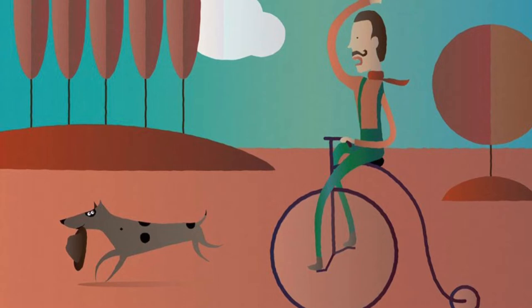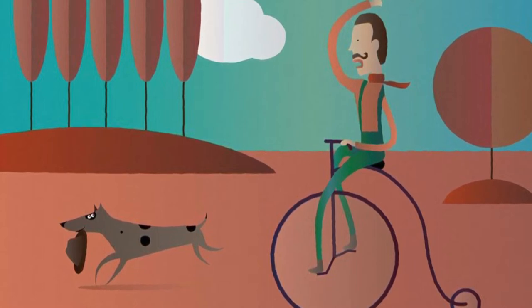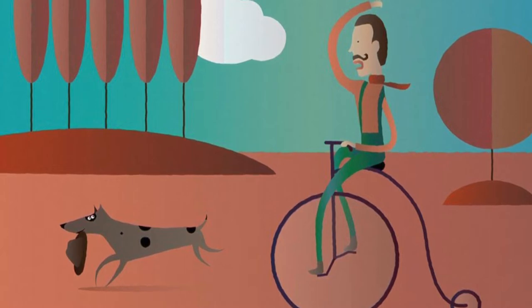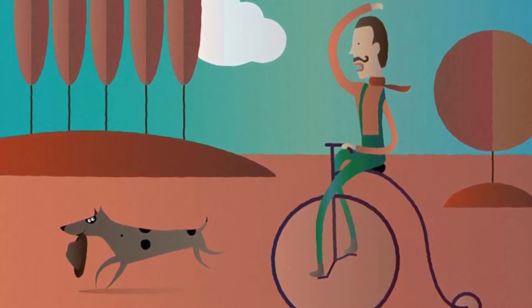'Twas Mulga Bill, from Eagle Hawk, that caught the cycling craze. He turned away the good old horse that served him many days. He dressed himself in cycling clothes, resplendent to be seen. He hurried off to town and bought a shining new machine.